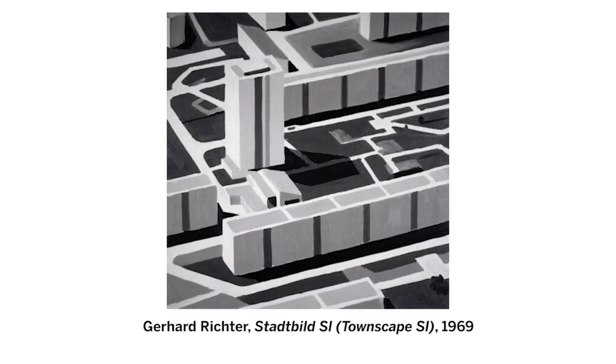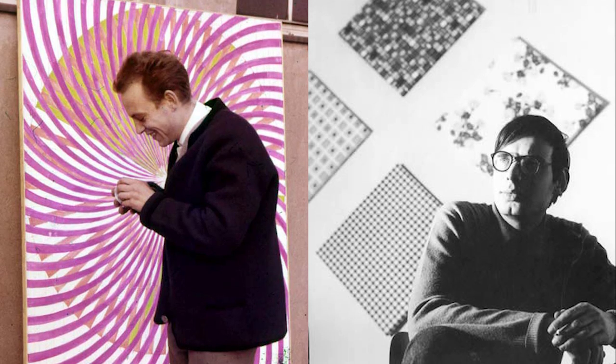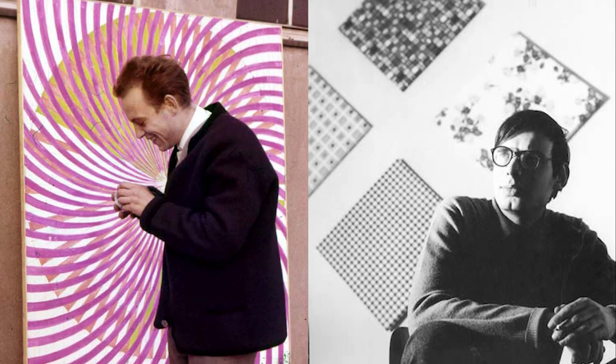In the 1960s, Polke's work galvanised not just West Germany, but the entire landscape of post-war painting. He aligned with contemporaries like Gerhard Richter, Manfred Kuttner and Konrad Lueg, and together they founded the Capitalist Realism movement, which straddled Germany's state-sponsored style of socialist realism and the subversive nature of pop art.